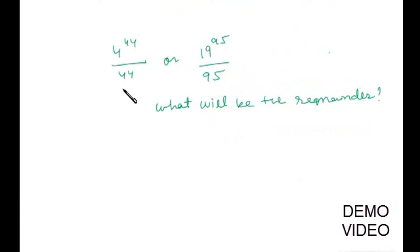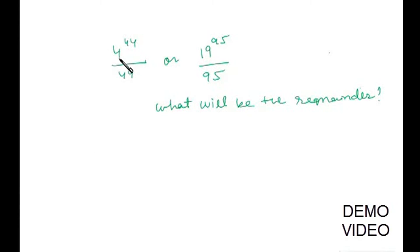Try these problems: 4^44 divided by 44, and 19^95 divided by 95 — what will be the remainder? The numbers and divisors are very large, so direct division is not possible. These types of problems are very frequently asked in CAT examinations. To solve them, you need to be algebraically and logically clear — do not use shortcuts without understanding the underlying logic.